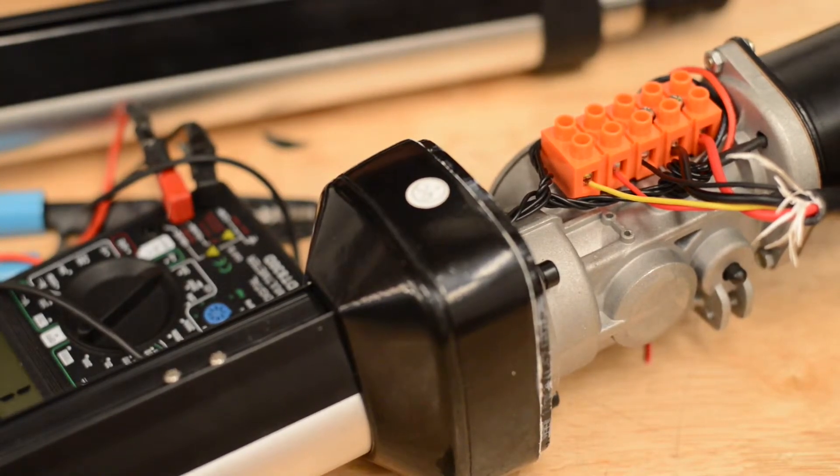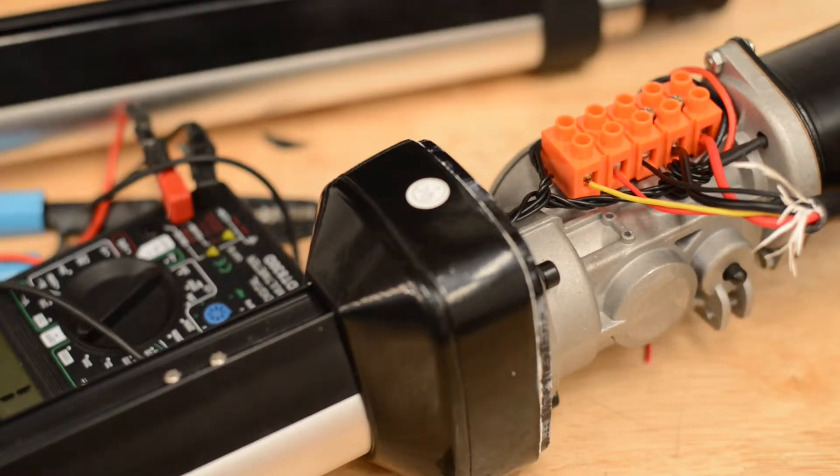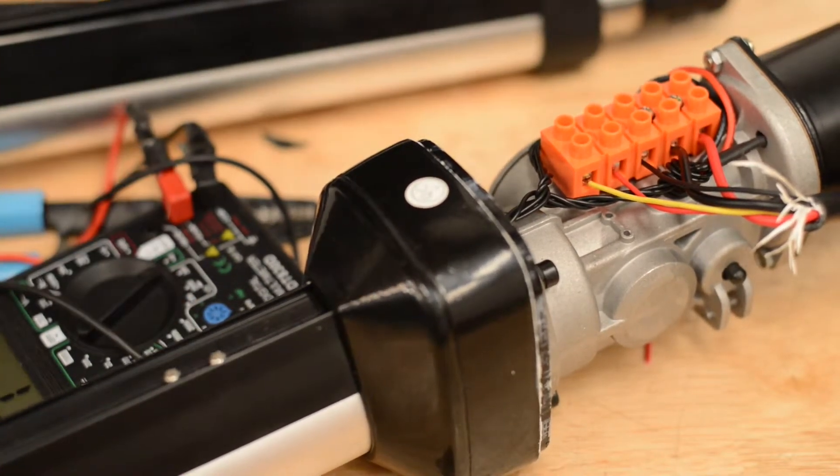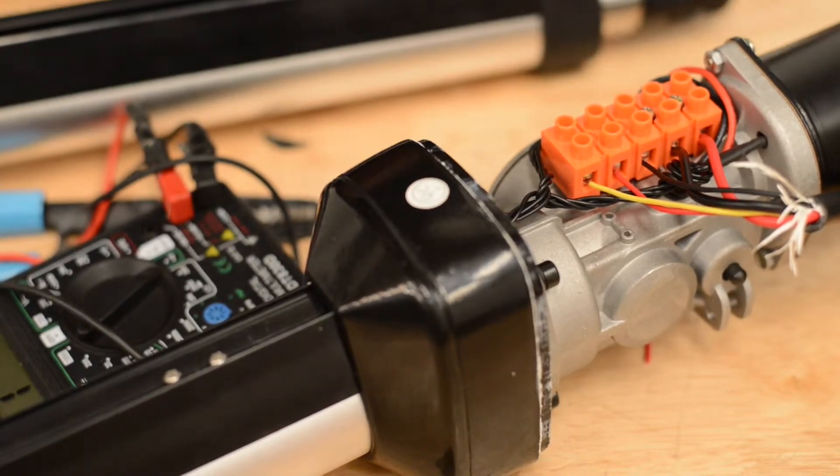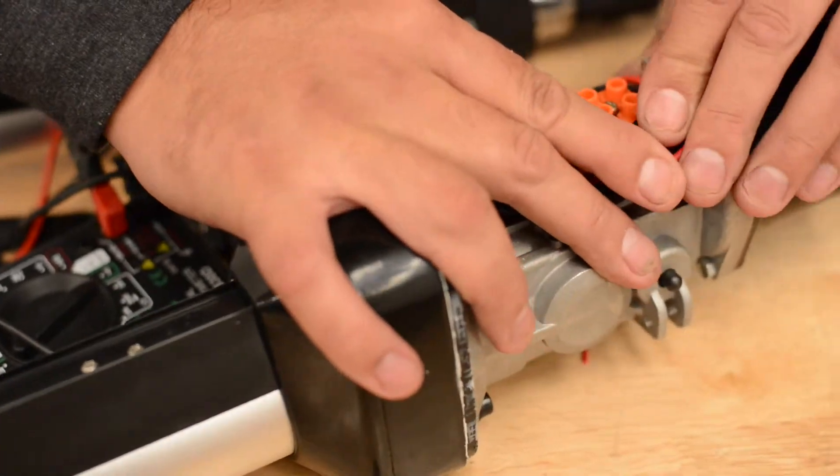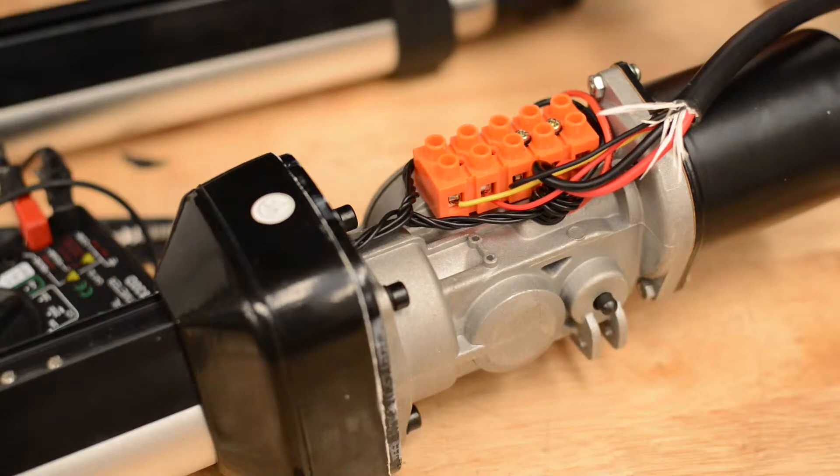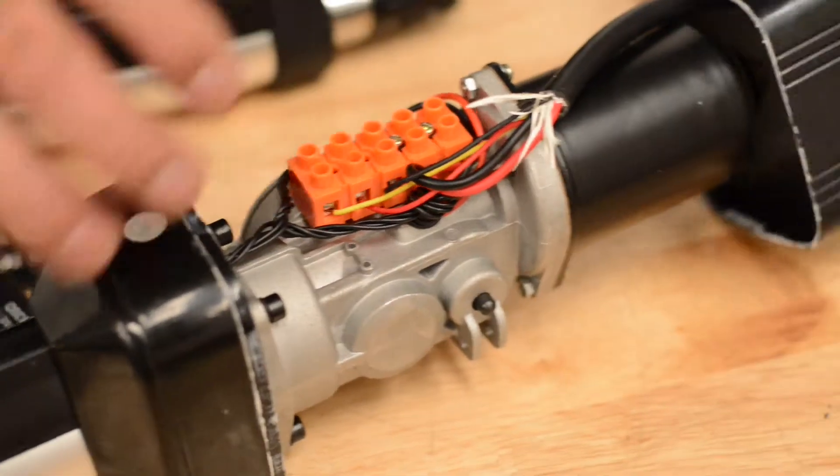So we're going to assume everything's fixed because we got continuity. We checked it on this end of the wire. So we know the wire is good. We know the limit switch is good. So now we can put it back together, confident that we have everything connected properly. When we're putting it back together, the more narrow side goes on the bottom.